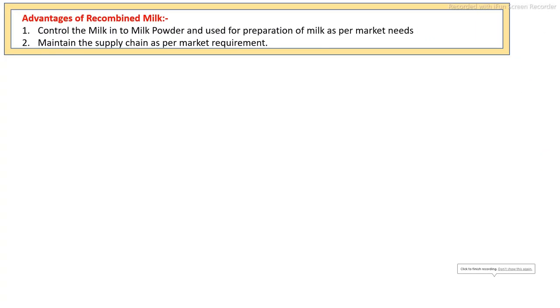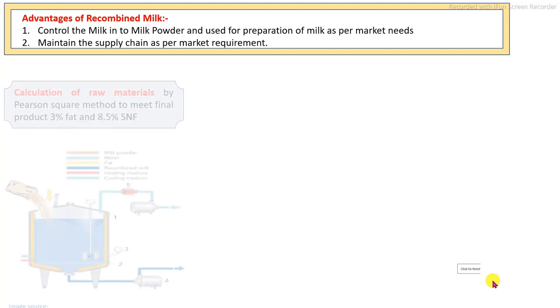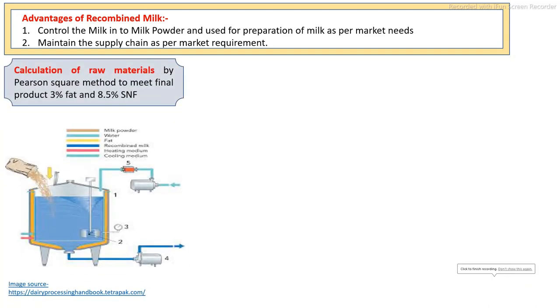The main advantage of preparation of recombined and reconstituted milk is that, as per the need of the market, we can continuously supply whatever quantity of milk is required and maintain the market supply chain as per the customer requirement.